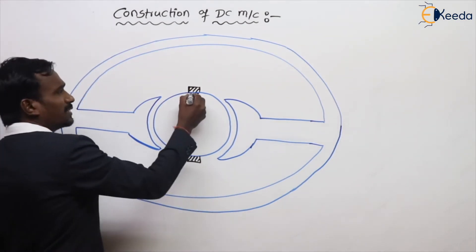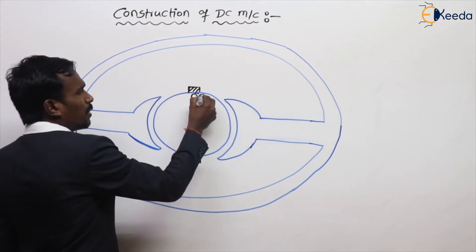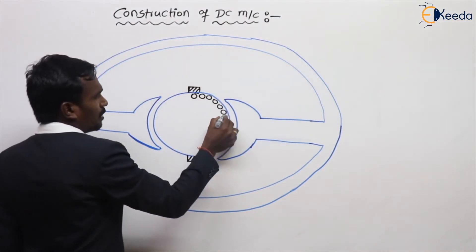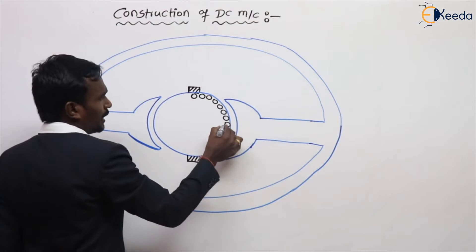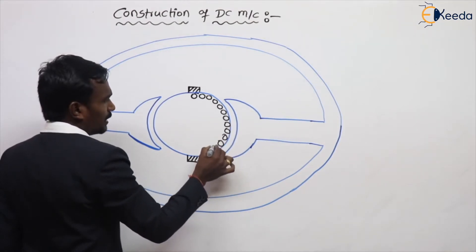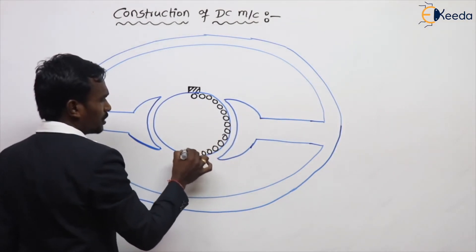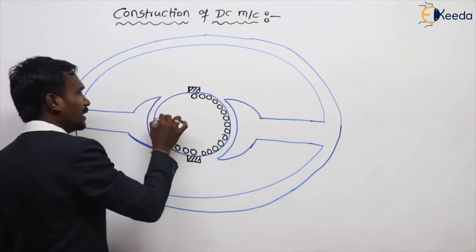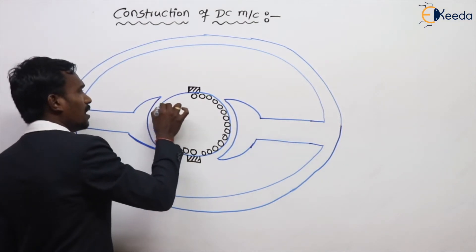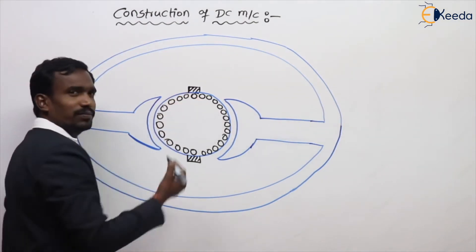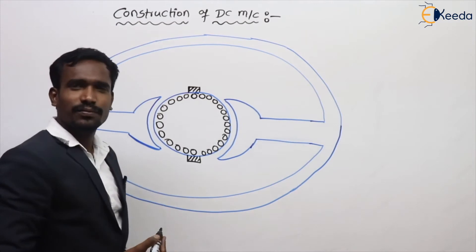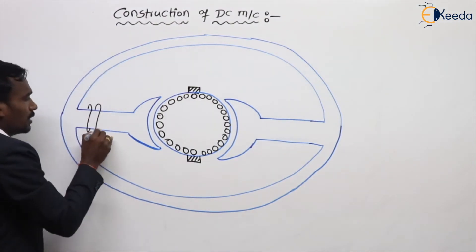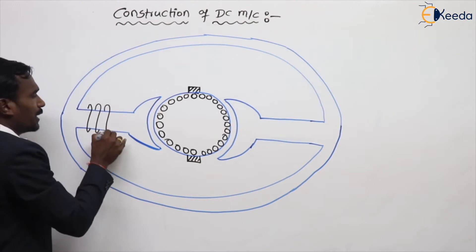Here, winding is there on the armature — that is called armature winding. The winding in the armature is nothing but armature winding. This is my armature winding. And winding on the poles is called field winding.